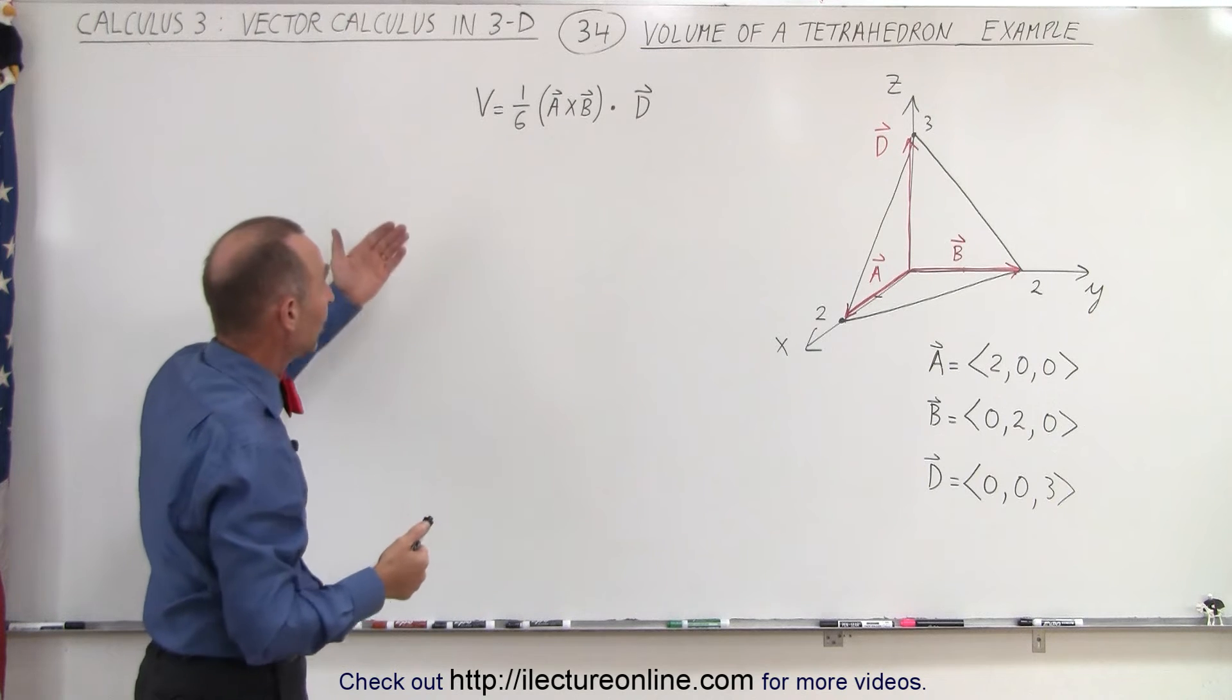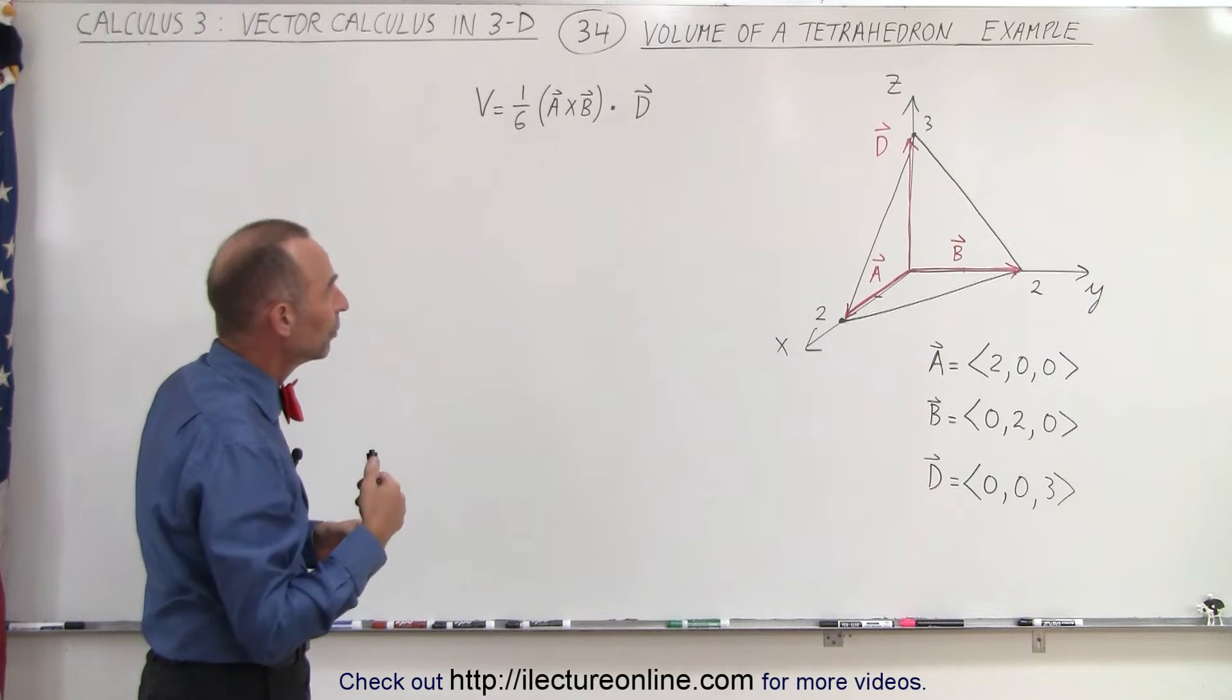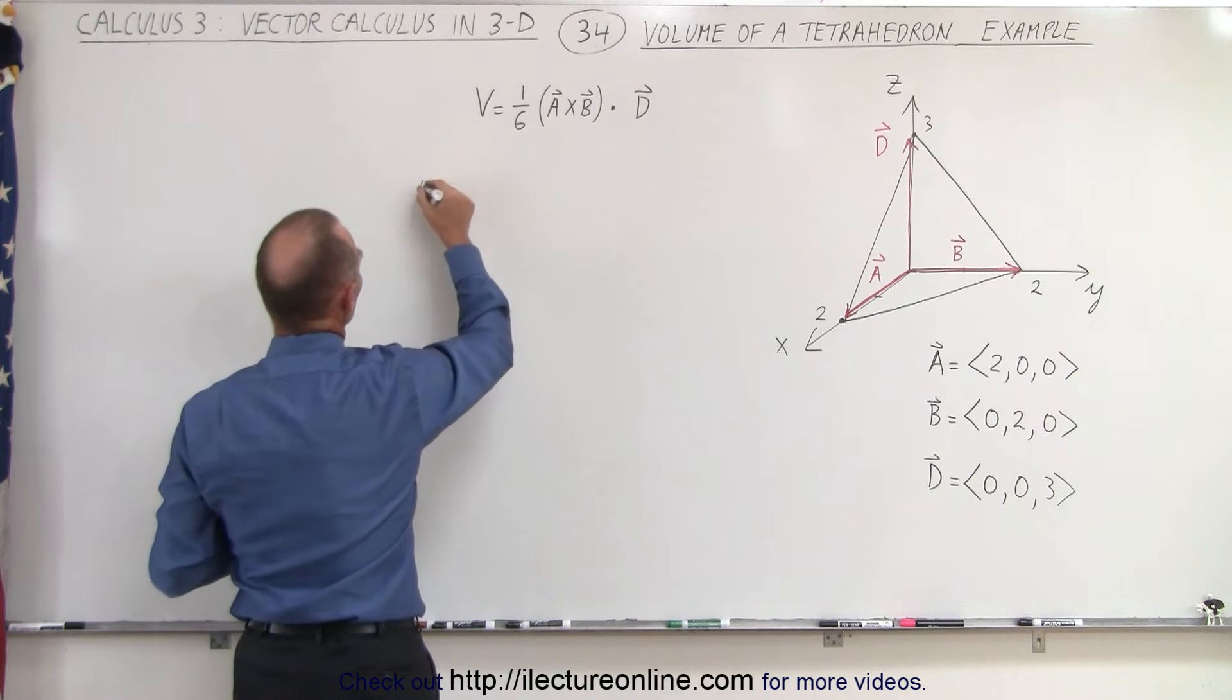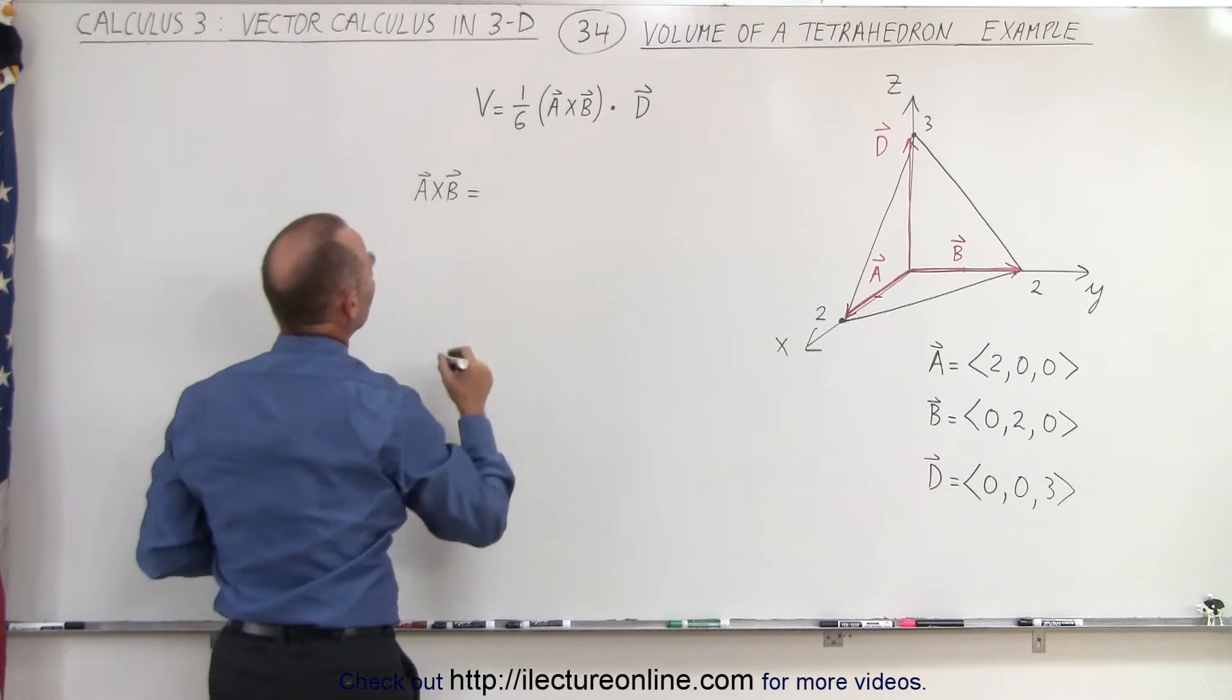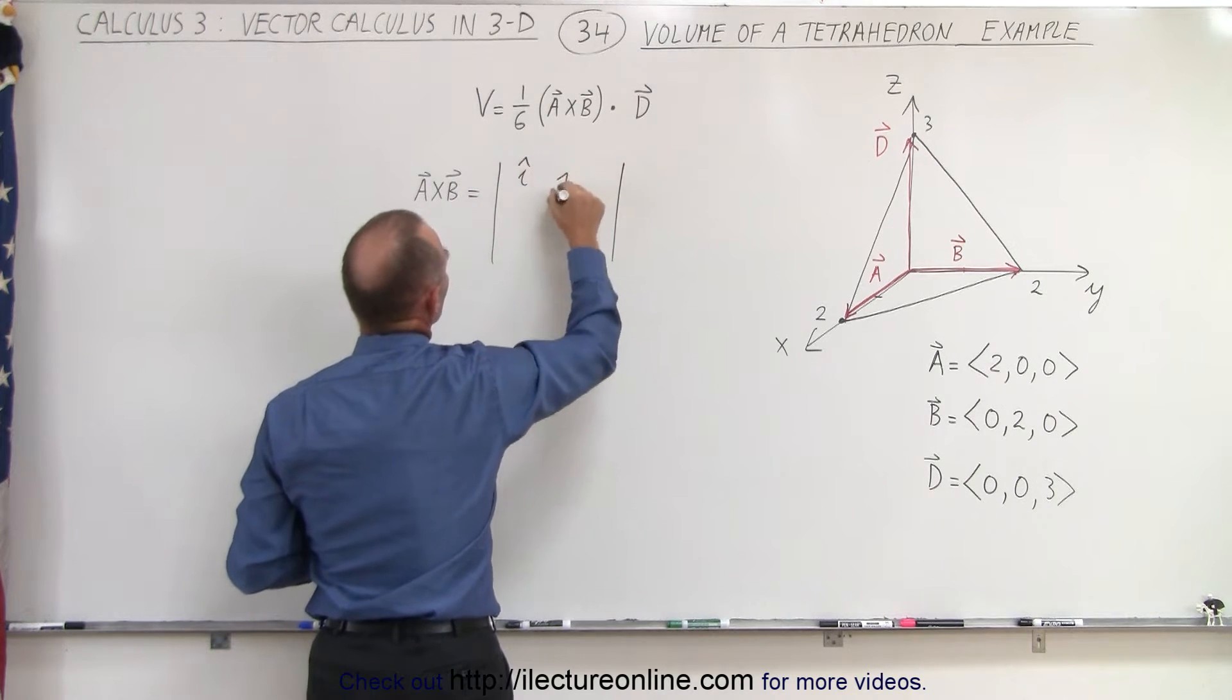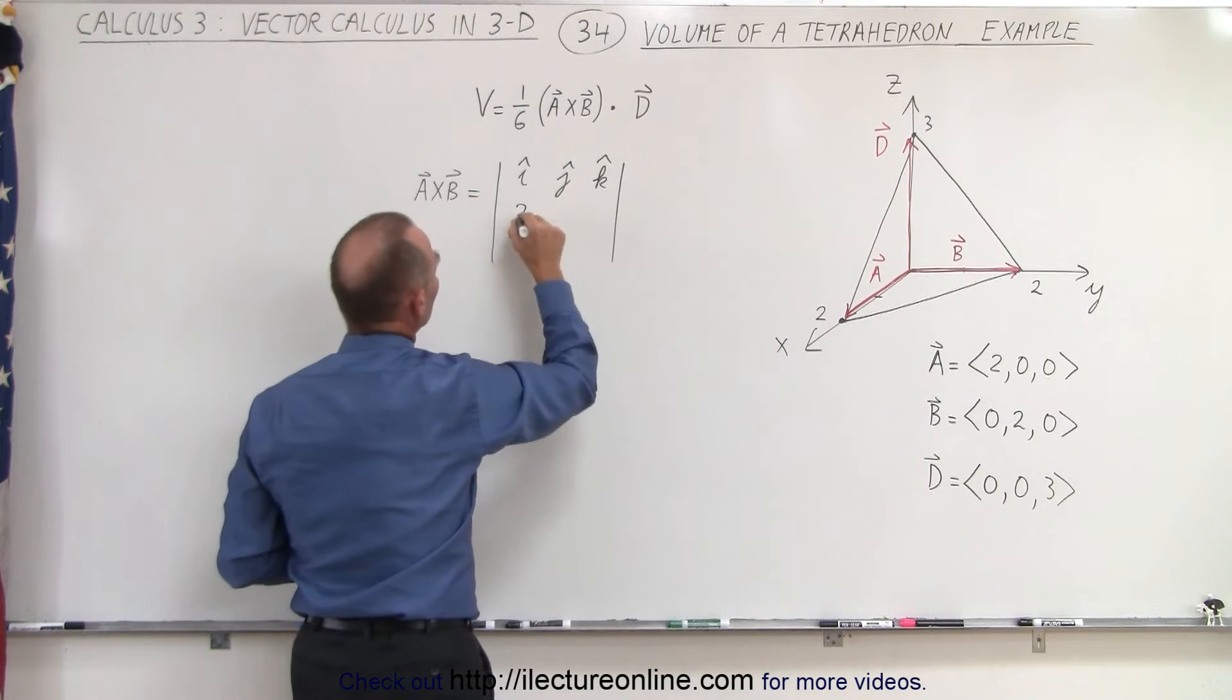So let's say we pick the volume V equals 1/6 times (A cross B) dotted with vector D. First, let's find the cross product A cross B, which equals the determinant of i, j, k. The components for A are defined by 2, 0, 0.